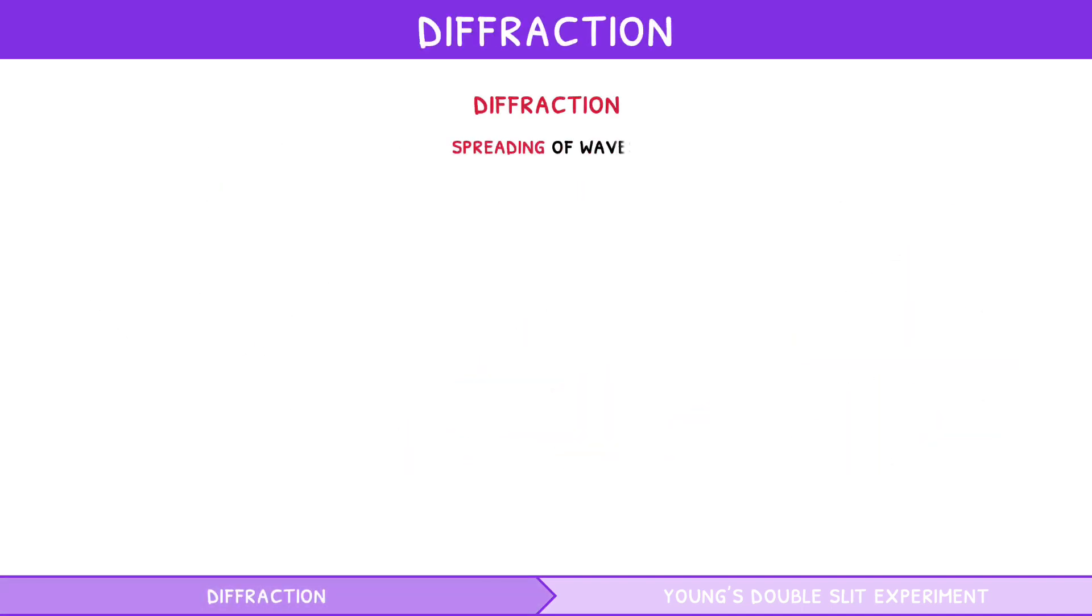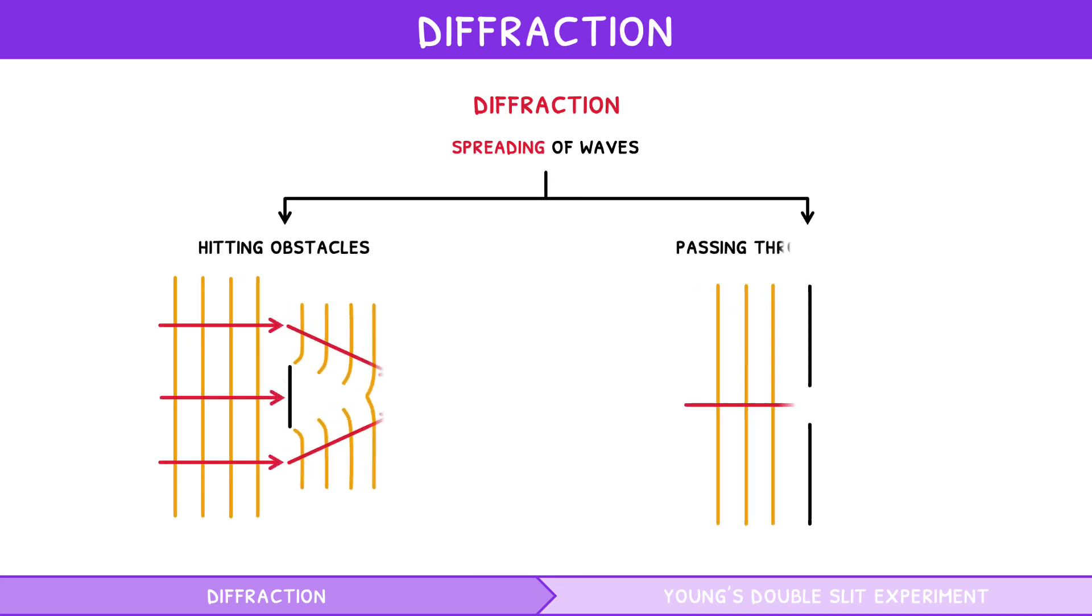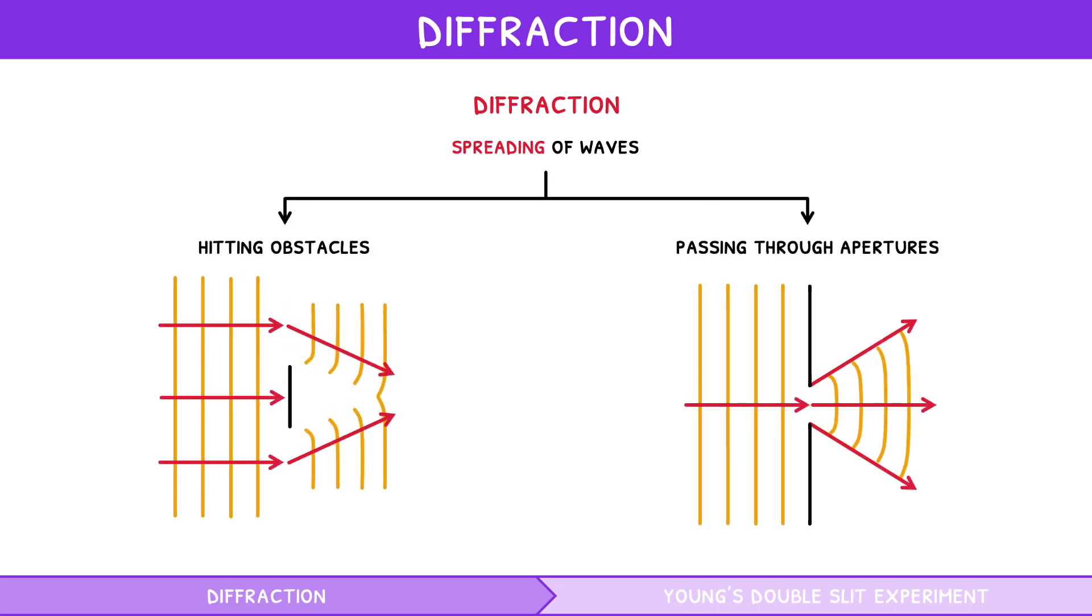Diffraction is the spreading of waves after hitting obstacles or passing through apertures. This occurs similarly in all wave types. It is commonly visualized with water waves, which we know spread around obstacles.